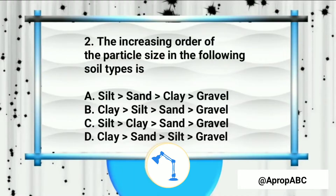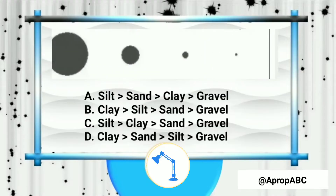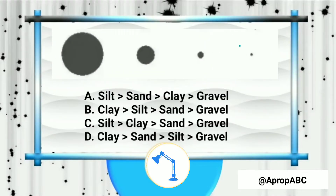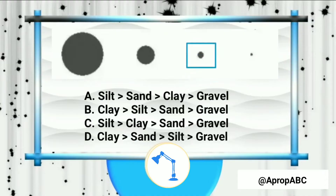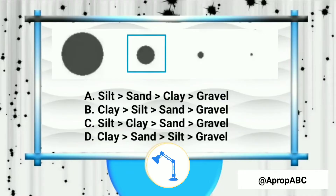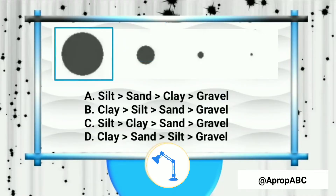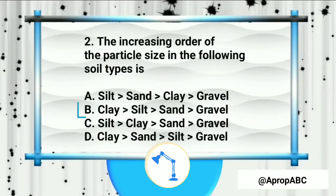The increasing order of particle size in soil types: we have silt, clay, sand, and gravel. It starts from clay — clay particles are very small — then silt, which has bigger particles than clay, then sand, which has bigger particles than silt, and finally gravel, which has the largest particles.